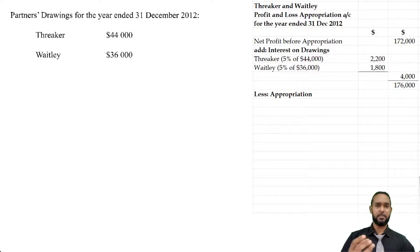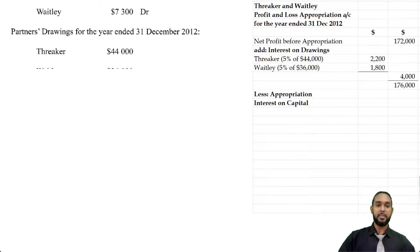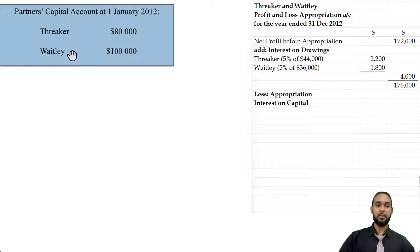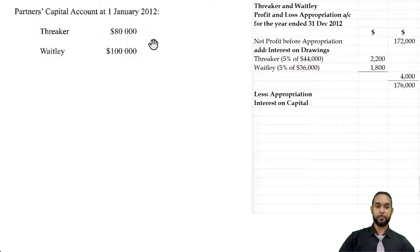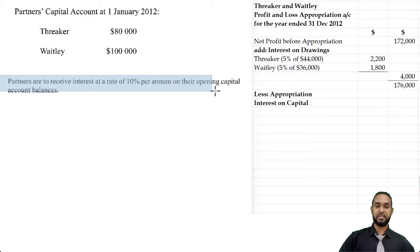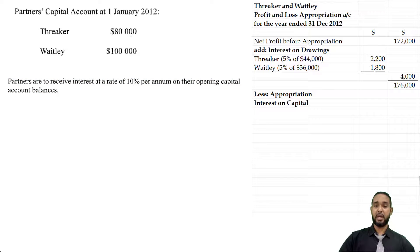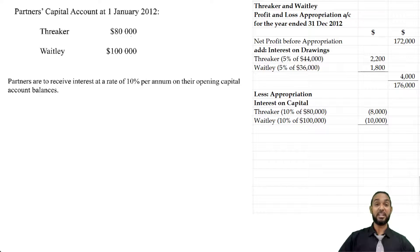There is no strict order for the appropriation except that the shared profit or loss must come last. I usually do interest on capital first. The capital balances were $80,000 for Threka and $100,000 for Waitly, and the interest rate on partners' capital balances was 10% per annum. So we multiply 10% by $80,000 for Threka and 10% by $100,000 for Waitly, giving us a total interest on capital of $18,000.